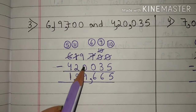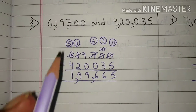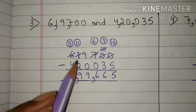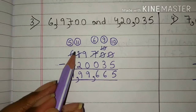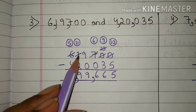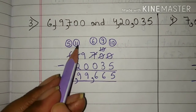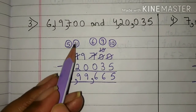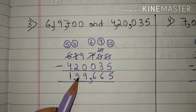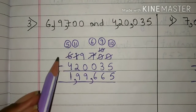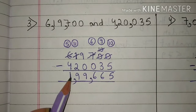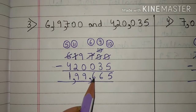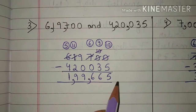Ten minus five is five. Nine minus three is six. Six minus zero is six. Nine minus zero is nine. One is smaller than two, so we will borrow one number from six to one. Now one will become eleven and six will become five. Eleven minus two is nine. Five minus four is one. The answer is 1,99,665.